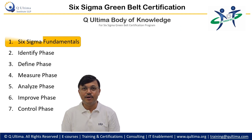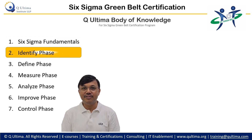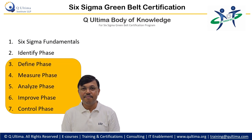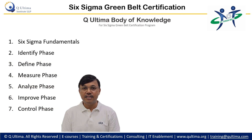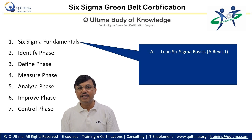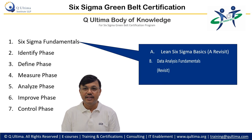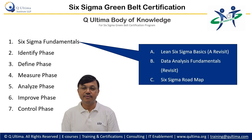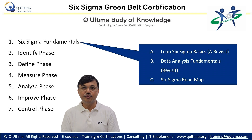Six Sigma Green Belt body of knowledge will contain Six Sigma fundamentals, the Identify phase which is unique in Q Ultima's body of knowledge, and DMAIC which is Define, Measure, Analyze, Improvement, and Control. The Six Sigma fundamentals will include Lean Six Sigma basics, which is a revisit for people who have already done the Yellow Belt course of Q Ultima, Data Analysis fundamentals, and the Six Sigma Green Belt road map where tools specific to Green Belt certification will be explained — which tool to be used in which phase.